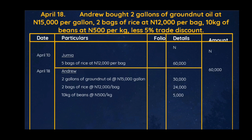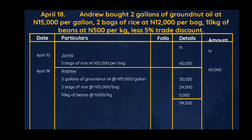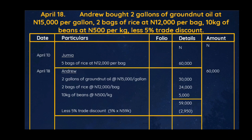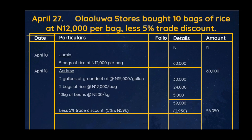Andrew is given a 5% trade discount. First we calculate the total amount of goods bought by Andrew: 30,000 + 24,000 + 5,000 = 59,000 naira. The discount is calculated on this total: 5% of 59,000 = 2,950 naira. We enter 'less 5% trade discount: 2,950'. Subtracting 2,950 from 59,000, the balance is 56,050 naira. We then close the entry. The total amount Andrew is owing us is 56,050 naira.